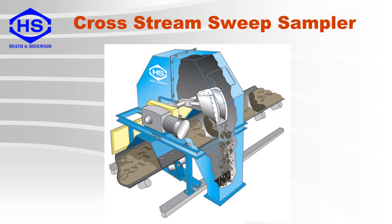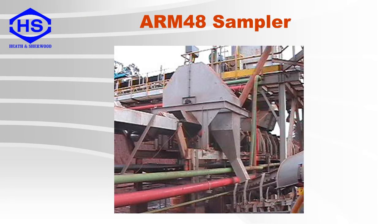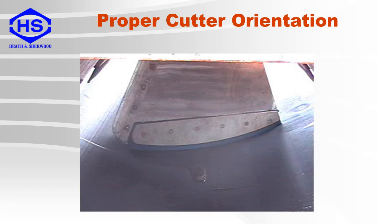We will now look at some specific cross-stream samplers. Here you can see an arm sampler where the cutter is driven through the material on a conveyor belt, and the increment is directed to a chute for further processing. This is an installation example of an arm system located on a 48-inch conveyor belt. Here is the cutter of the arm system — you can see that there are adjustable rubber blades which are in contact with the conveyor belt to ensure that all particles are removed.